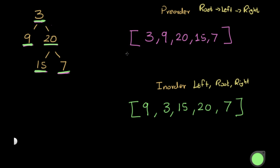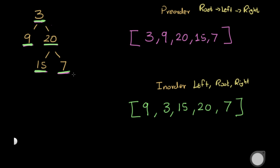These are the two traversals we're given in the question. Now, using these two, how can we construct the binary tree? The key insight is that the first element in the pre-order traversal is always the root. In this case that's 3, so 3 is the root of our tree.